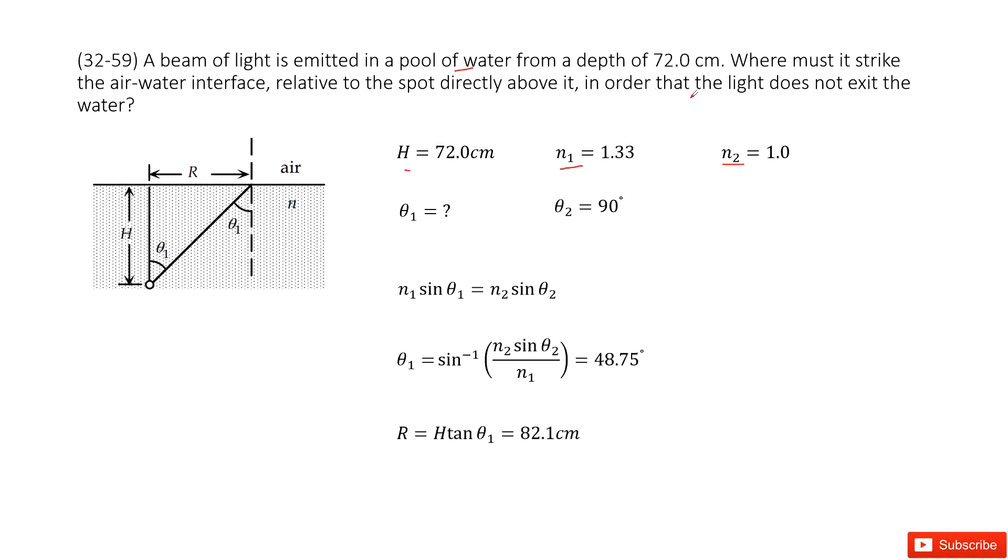But it says the light does not exit the water. What does that mean? That means the light travels just in this direction. This is internal reflection, so theta 2 is 90 degrees.